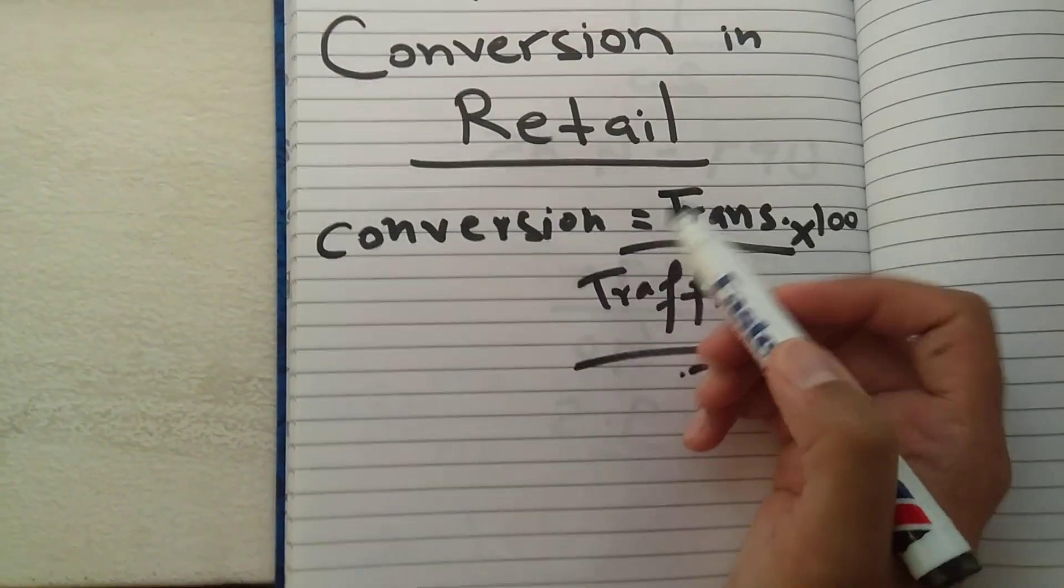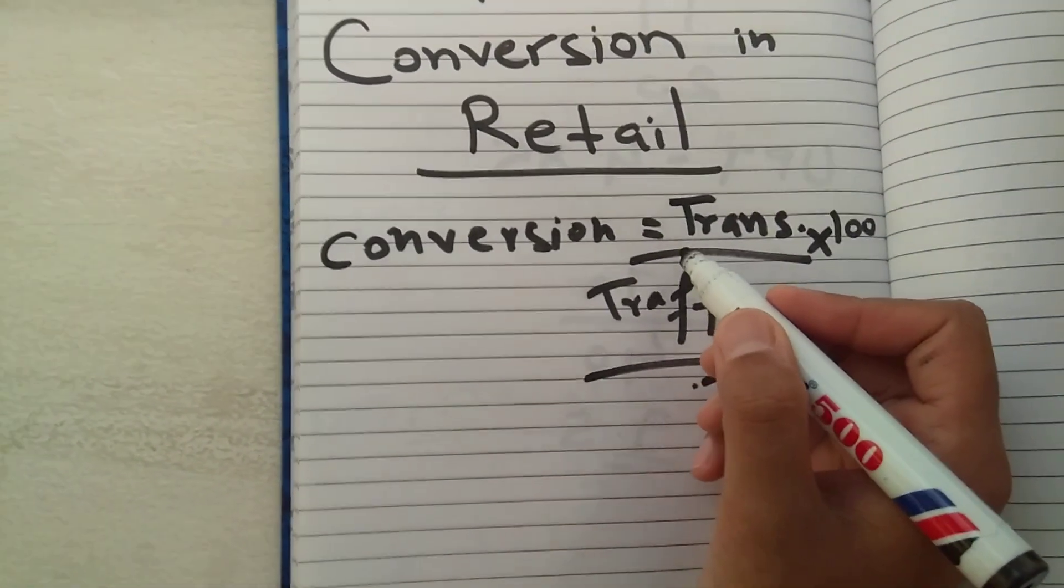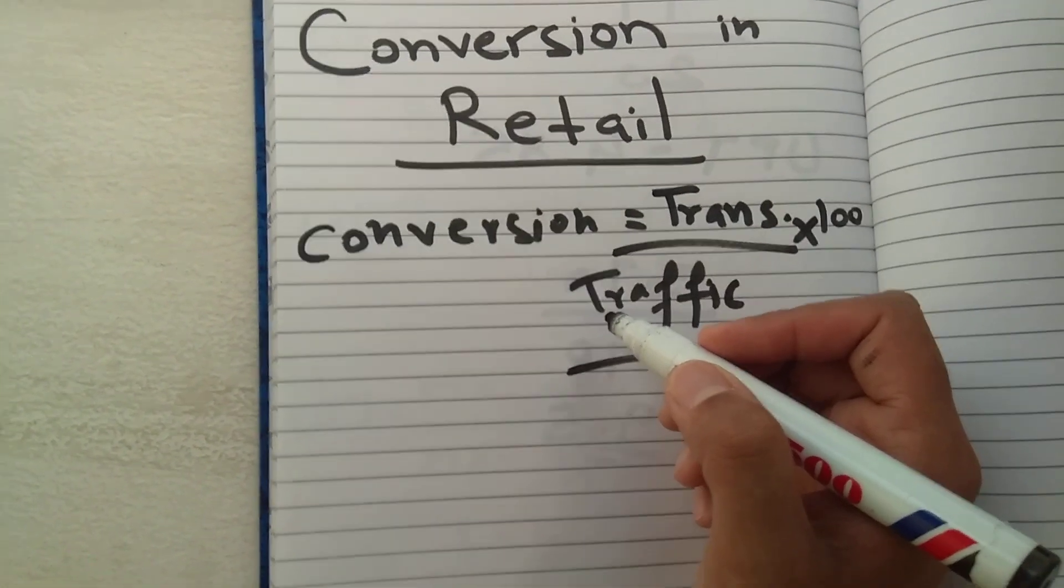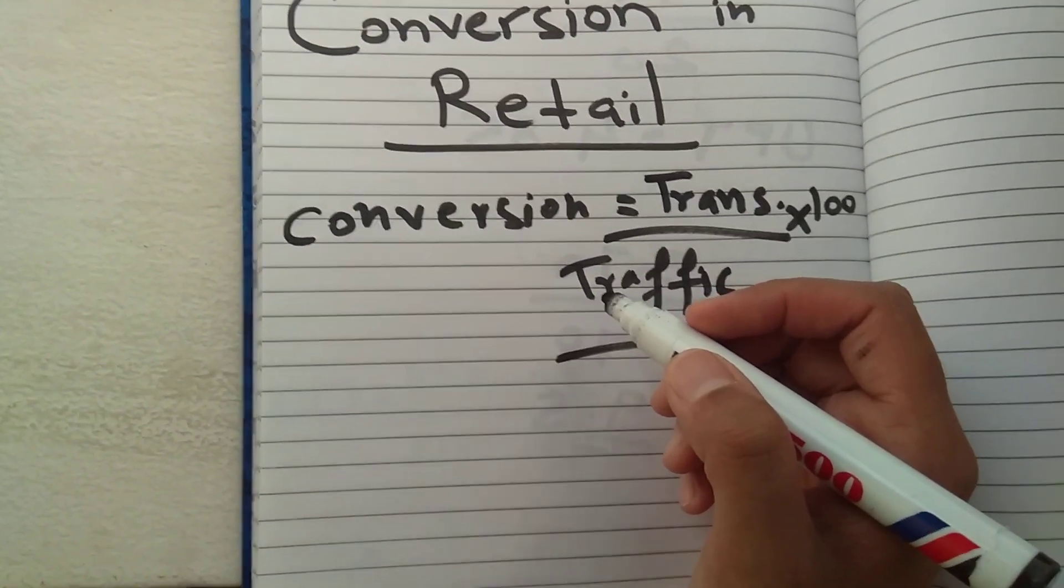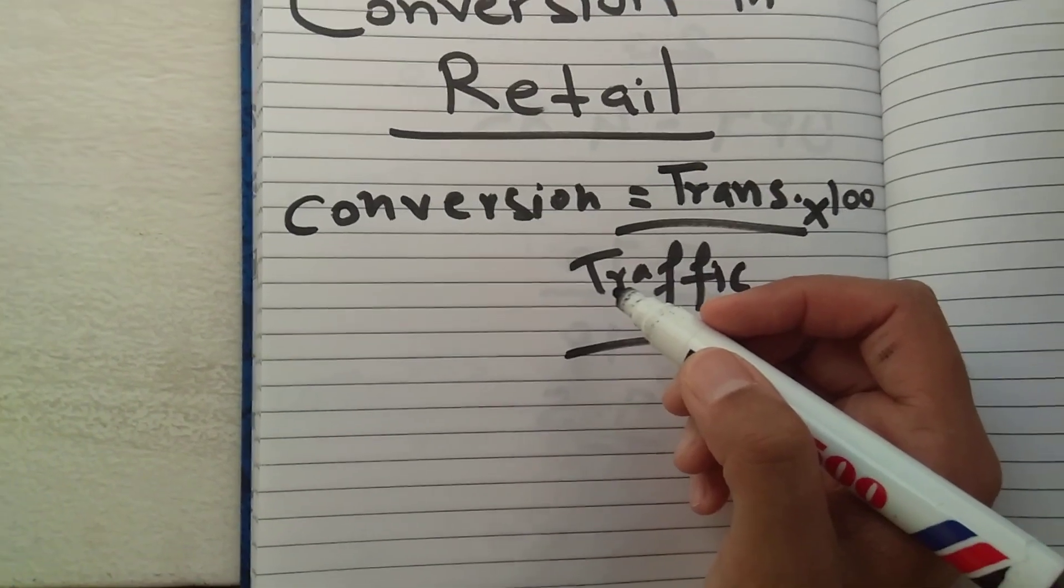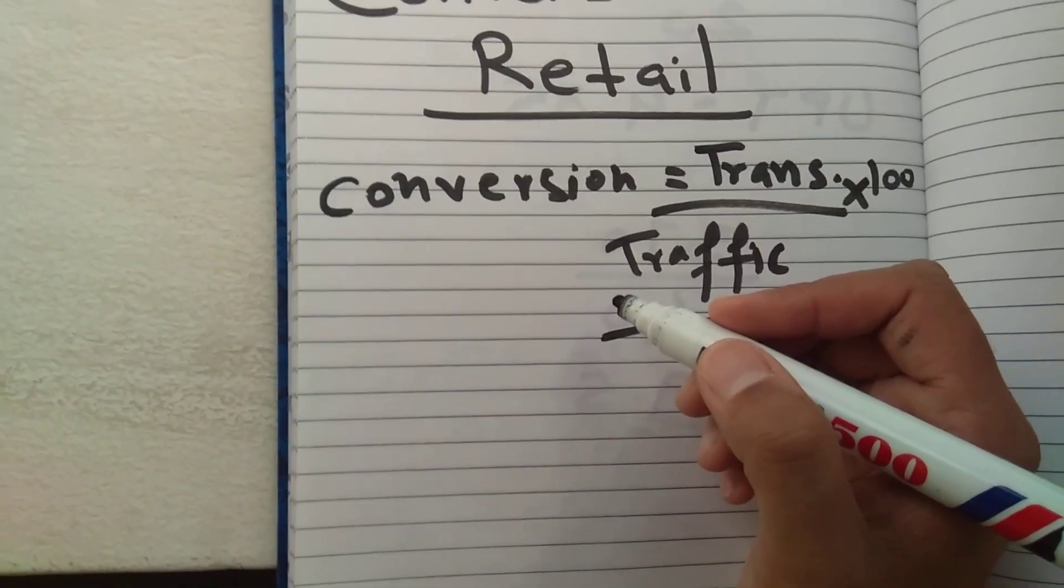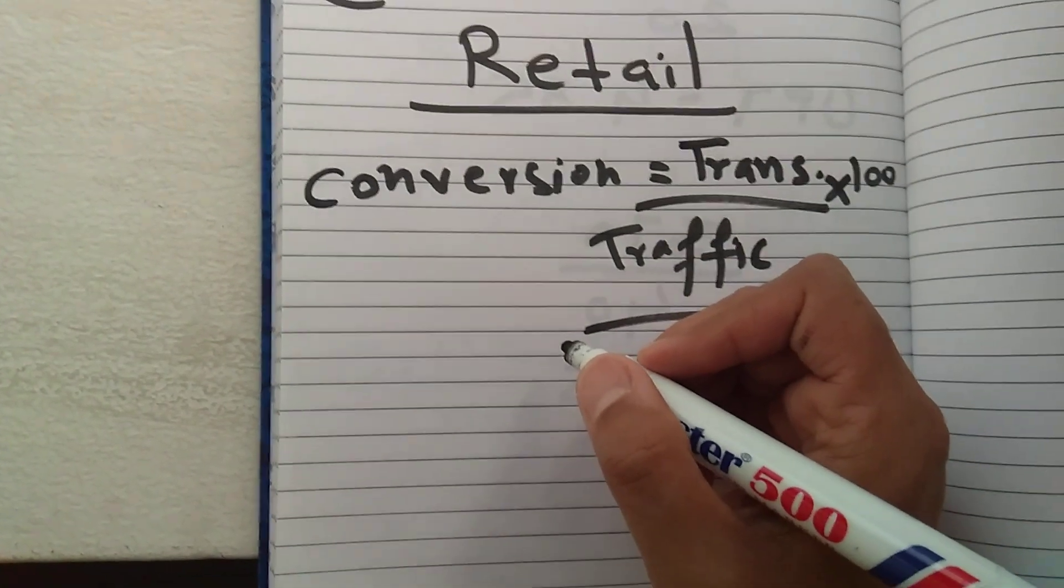Transaction, as you know, is whatever bill you make - it's called one transaction. And traffic, what is traffic? Traffic is the number of people that enter into your store or enter into your outlet or enter into your mall. So if you go into any store or outlet, you see there are electronic sensors over there which count the number of people.